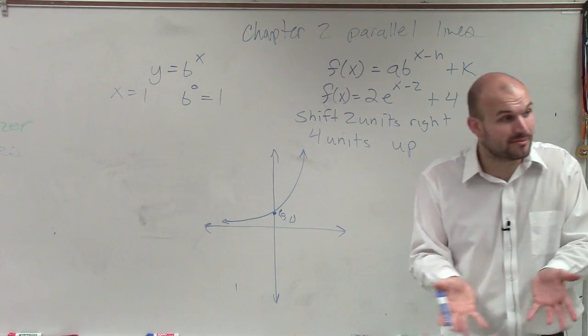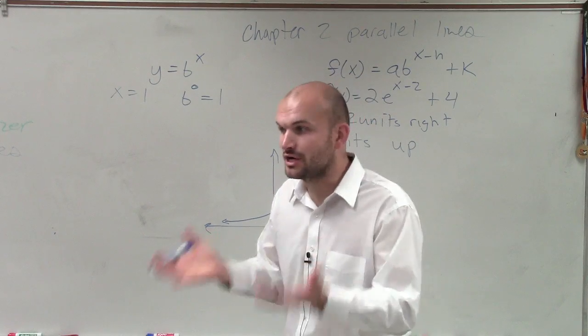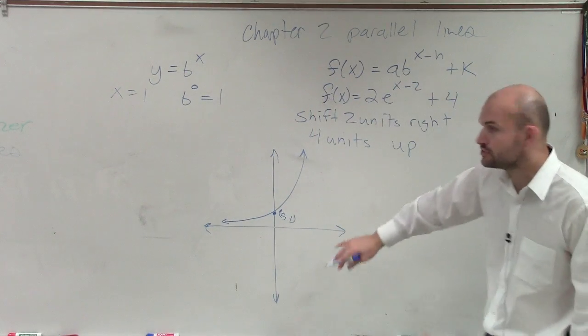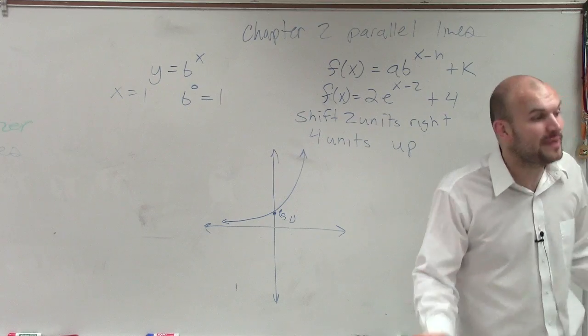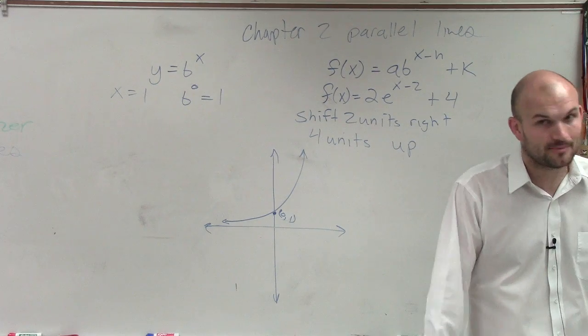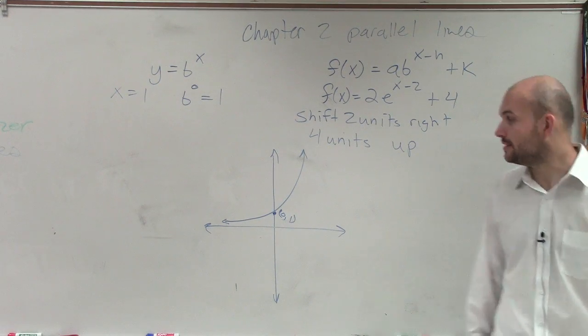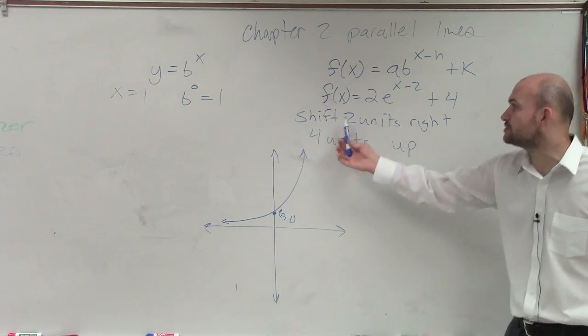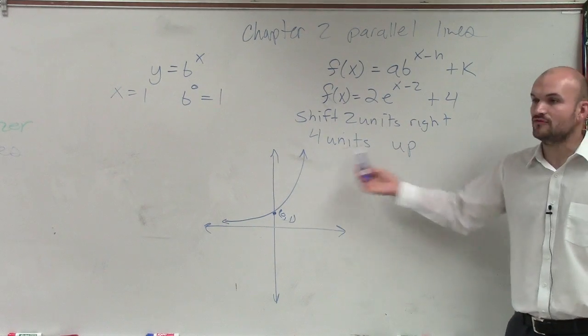So therefore, you should at least have a graph that looks like this. If anything, draw the parent graph. Then all it's telling you guys to do is shift two units to the right and four units up.